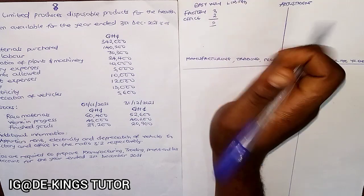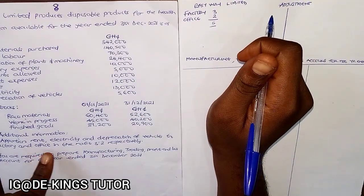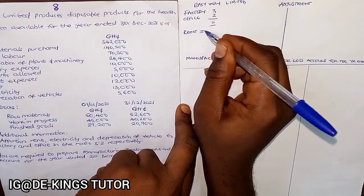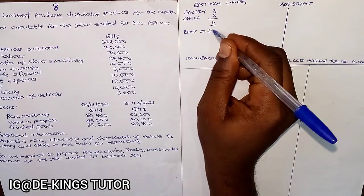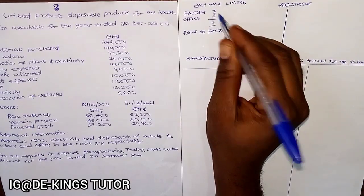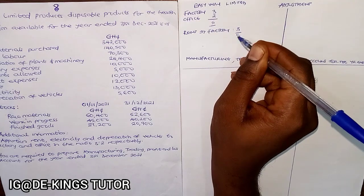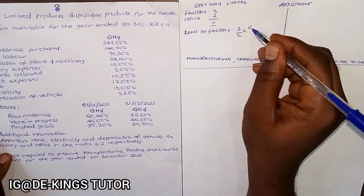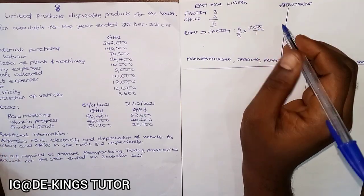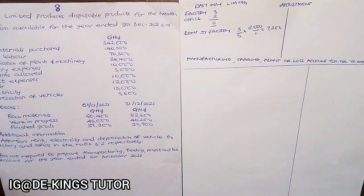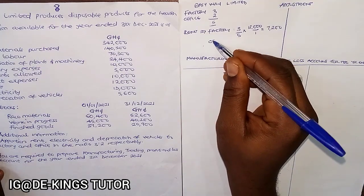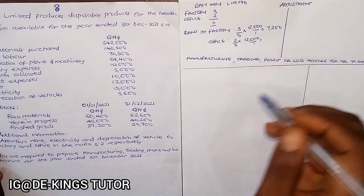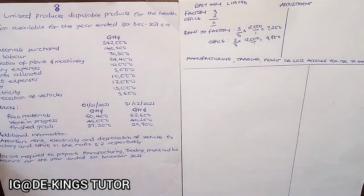Factory is three and office is two, so three plus two equals five — that's the total. Starting with rent apportionment: factory portion is 3/5 × 12,000 = 7,200. Office portion is 2/5 × 12,000 = 4,800. When you add these two they should give you 12,000.